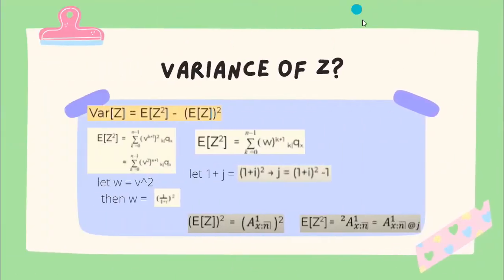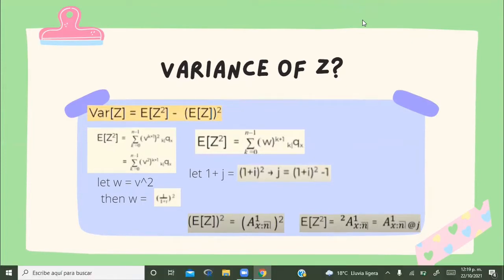How to calculate the variance of c: the variance of c is the second moment minus the first moment squared. We have to calculate the second moment, which will be the sum from k equals 0 to n minus 1 of a discount factor raised to k plus 1, raised to the power of 2, multiplied by the probability that a person of age x survives k years and dies the next year. After that, we do simple math and then make a variable change where w will be the discount factor raised to the power of 2.